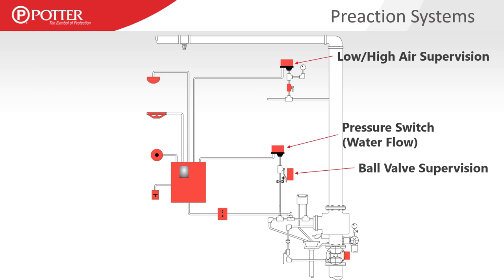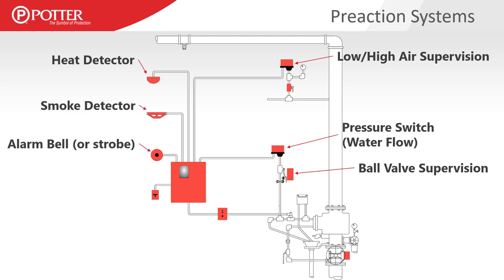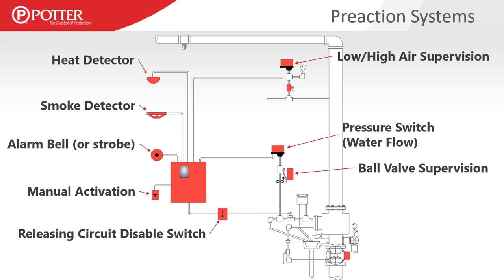Ball valve supervision is again important — if we have a ball valve in line before the pressure type flow switch, we need to supervise that valve to keep it from being inadvertently left shut. Pre-action systems also include fire alarm devices such as heat detectors, smoke detectors, alarm bells or strobes tied to the activation of the system, manual activation and manual releasing or disable switches. Any valve that controls water supply to any of these systems has to have that valve supervised.